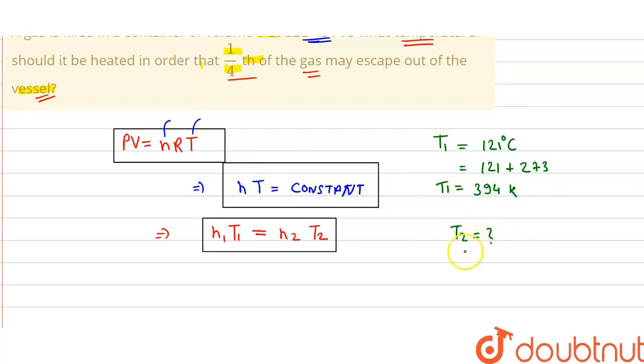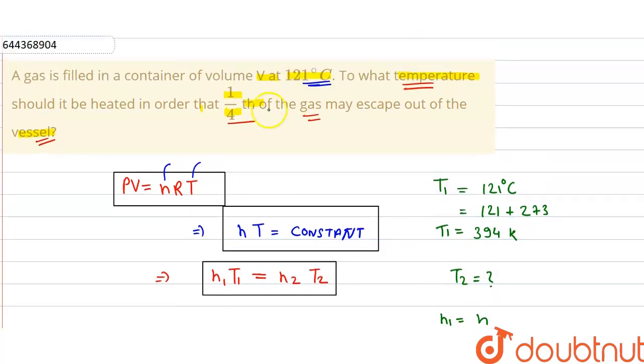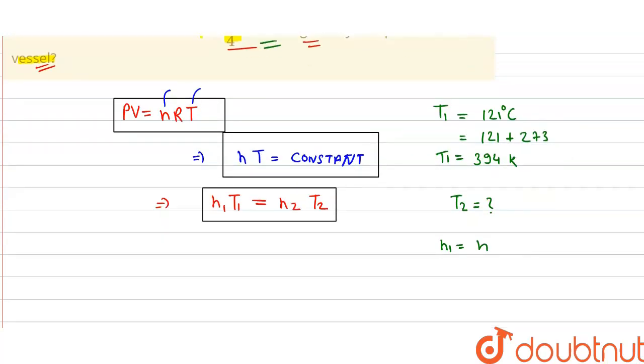For moles let's take our initial mole n1 as n. Since 1 by 4th of the gas may escape out of the vessel, we can take n2 as n minus n by 4. Here n by 4 escapes out, so we get 4n minus n which equals 3n by 4.